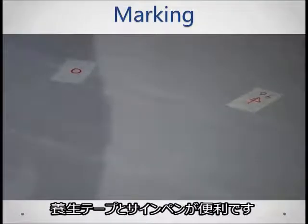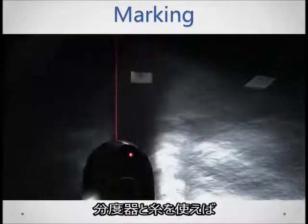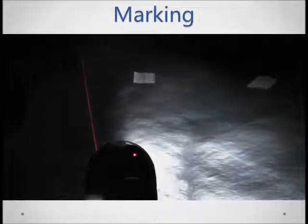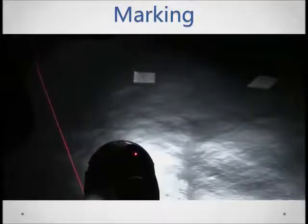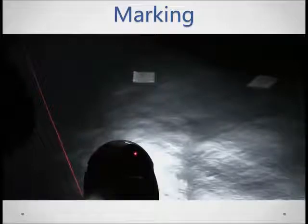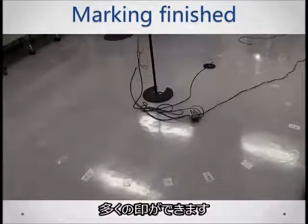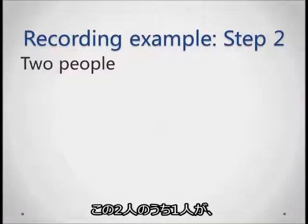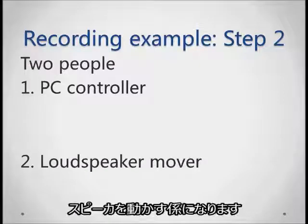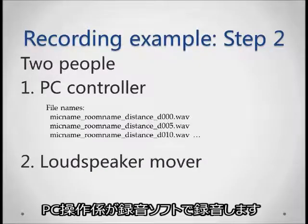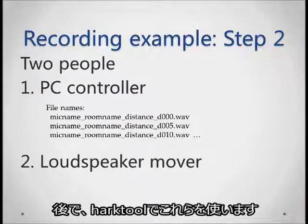Some masking tape and a felt marker are useful here. Here we're measuring angles using a laser measuring device, but you can do exactly the same thing with a string and a protractor. In the end, you should have measured many points around your microphone array. Now assign a PC controller to control the playing and recording of the TSPs, and a second person to move the speaker after each TSP is played. The PC controller will use the software to record the TSPs — please take note of where it saves the files, as you'll need to tell HARC Tool 3 where to fetch them.